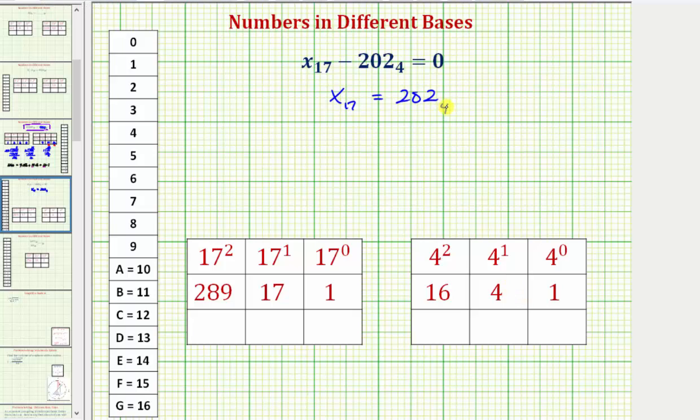So this 2 is in the 1's place value, the 0 is in the 4's place value, and this 2 is in the 16's place value. So we're adding 2, 0, 2 in base 4. We'd have x base 17 equals 2 times 16 plus 0 times 4, plus 2 times 1.